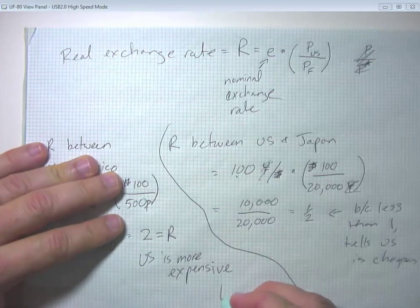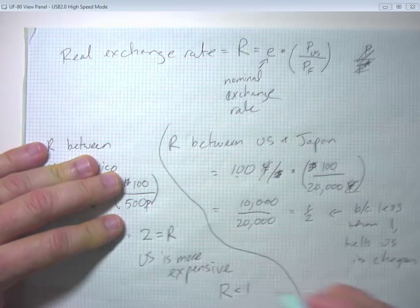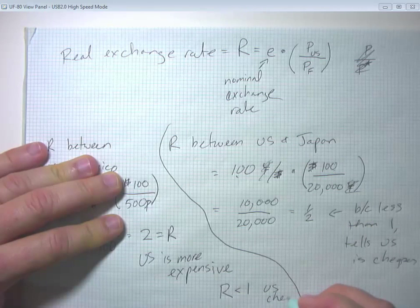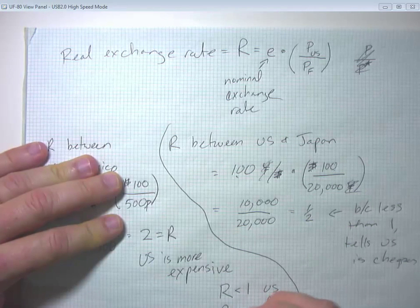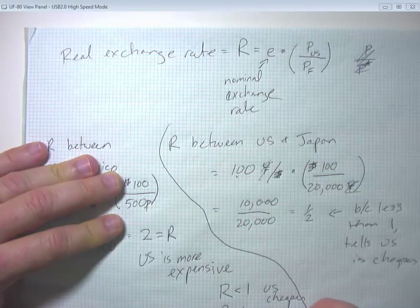So in summary, if R is less than one, the US is cheaper. If R is greater than one, the US is more expensive.